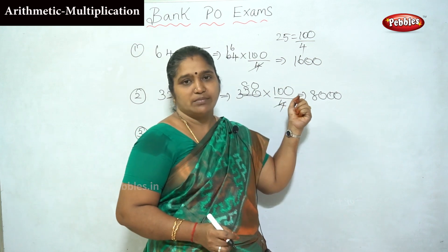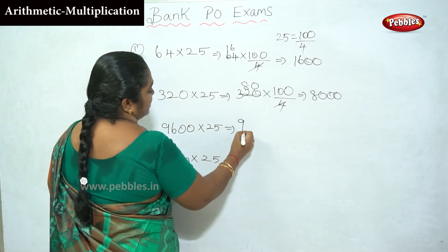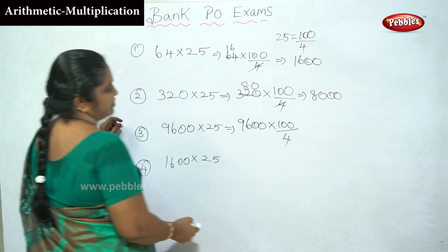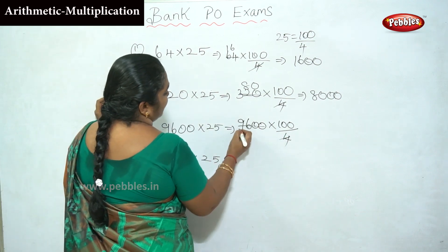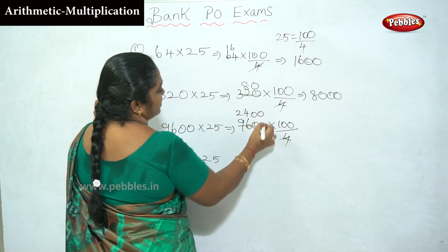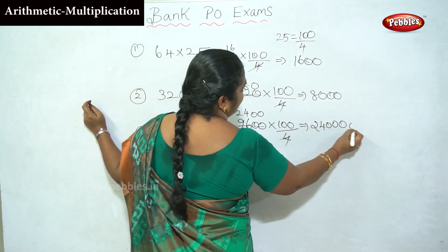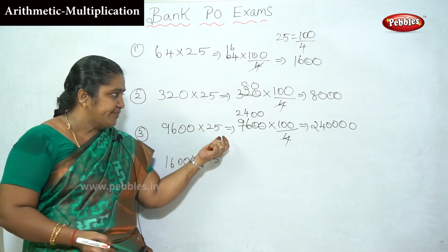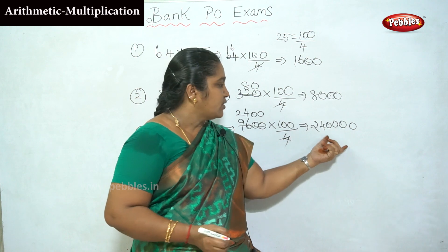320 into 25 means 100 by 4. Cancel: 8, 0 — total answer is 8,000. Now 9,600 into 25: 100 by 4. 9600 divided by 4 gives 2400. So the answer is 2,40,000.